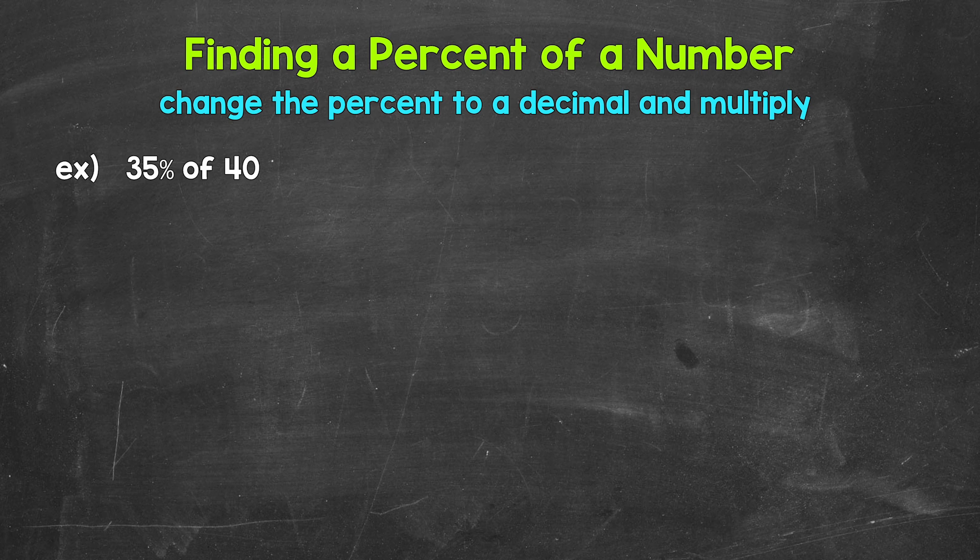Now remember, percent means per 100. In other words, percent means for every 100, or out of 100. So 35% is 35 over 100 as a fraction. So again, 35% equals 35 over 100, 35 hundredths, as a fraction.